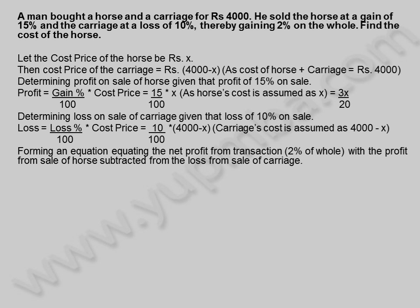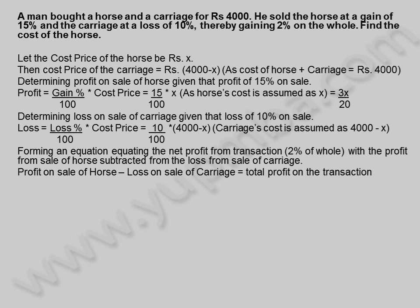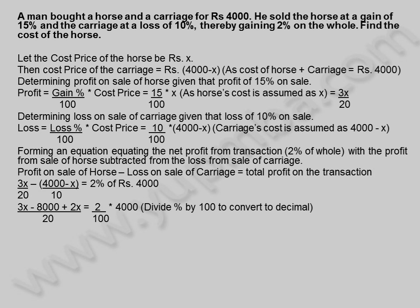Forming an equation equating the net profit from the transaction — 2% of whole — with the profit from sale of horse subtracted by the loss from sale of carriage. Profit on sale of horse minus loss on sale of carriage equals total profit: 3X by 20 minus (4,000 minus X) divided by 10 equals 2% of 4,000 rupees. This gives (3X minus 8,000 plus 2X) divided by 20 equals 2 by 100 into 4,000, so 5X minus 8,000 equals 1,600.